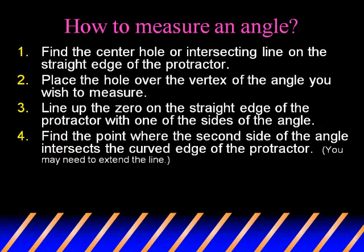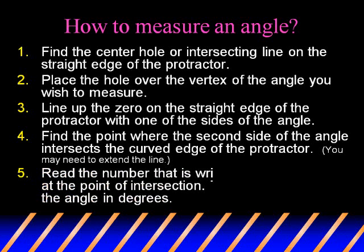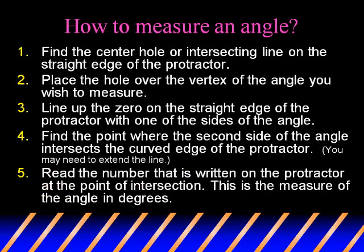Find the point where the second side of the angle intersects the curved edge of the protractor. You may need to extend the line so you can read exactly where it is. Read the number that is written on the protractor at the point of intersection — this is the measure of the angle in degrees.